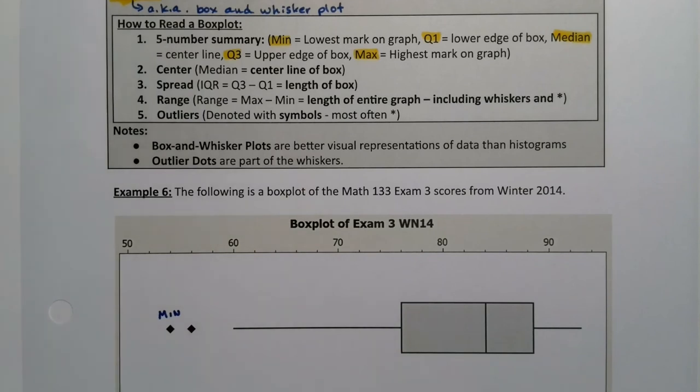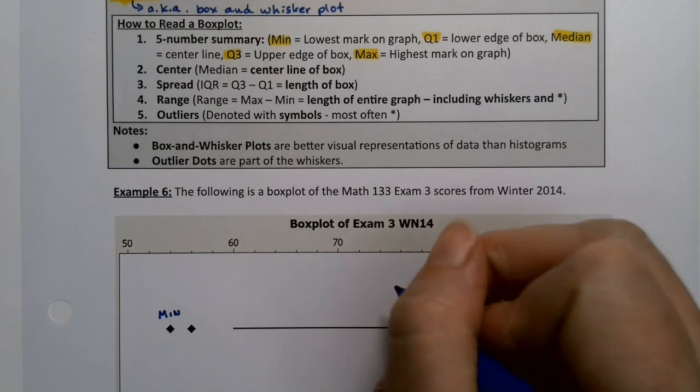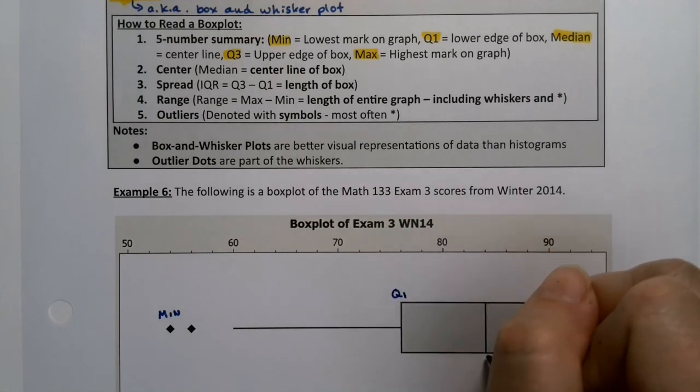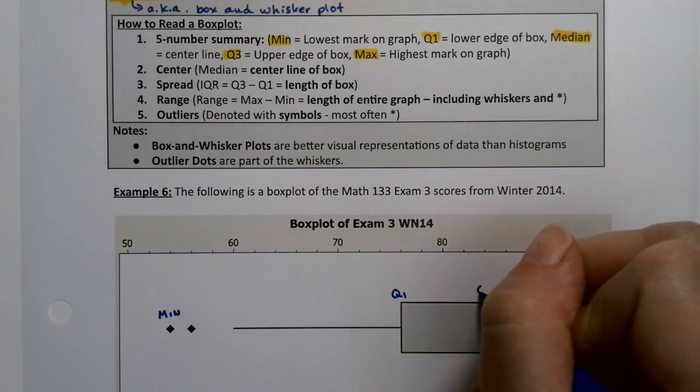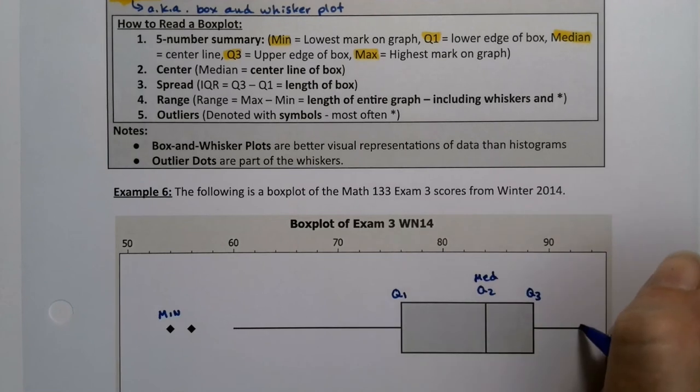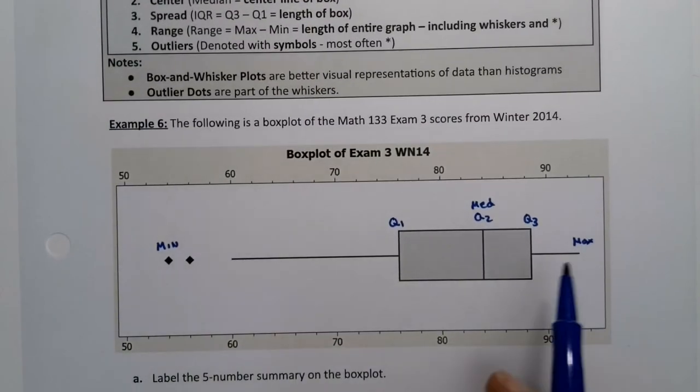The Q1—I was going to say the median, but let's do the Q1—Q1 is the lower mark on the edge of the box. So this value right here is Q1. This middle line, the center line, is Q2, which is the median. And then this is Q3, and then the highest mark out there is the max.